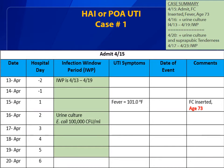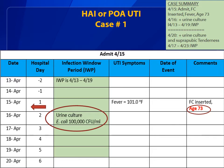Let's review case one. On April 15th, a patient, age 73, is admitted for pneumonia with a fever of 101 degrees Fahrenheit. A Foley catheter is inserted. On day two, the patient's urine tests positive for E. coli greater than 100,000 colony-forming units, or CFUs, per milliliter. On days three through five, there are no UTI symptoms. On the sixth day in the hospital, the patient complains of suprapubic tenderness. Since the patient tested positive on day two for E. coli, would this infection be considered as present on admission?